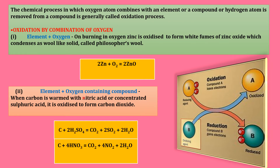The second type is element plus oxygen-containing compound. For example, carbon is an element and H₂SO₄ is sulfuric acid, which is an oxygen-containing compound. When they react, carbon dioxide (CO₂), sulfur dioxide (SO₂), and water (H₂O) are formed. Oxidation occurs exactly from carbon to carbon dioxide — by combination of oxygen with the carbon element.